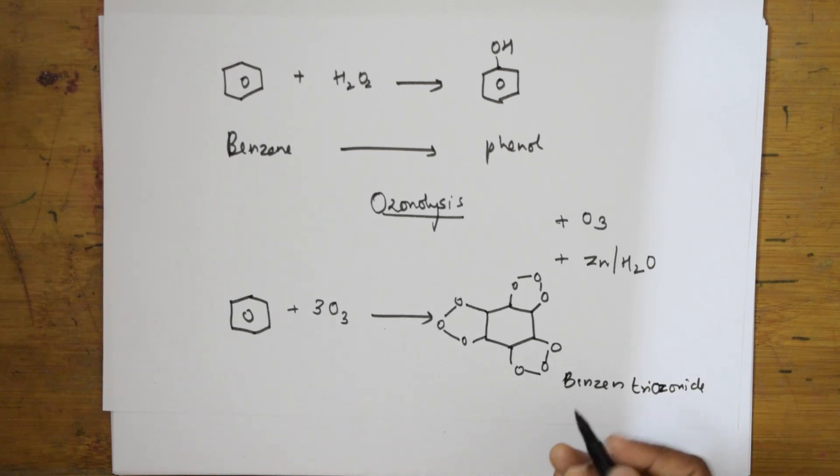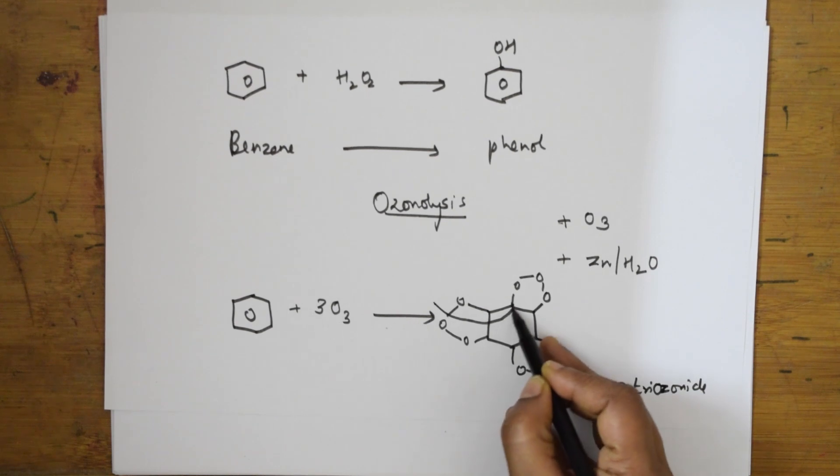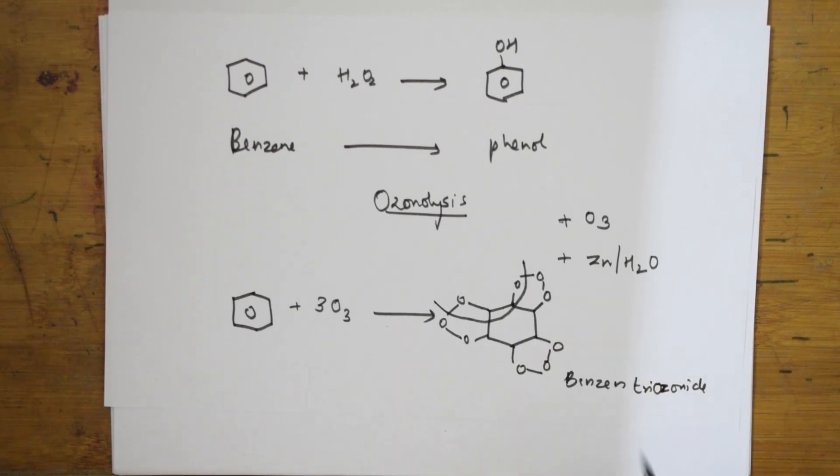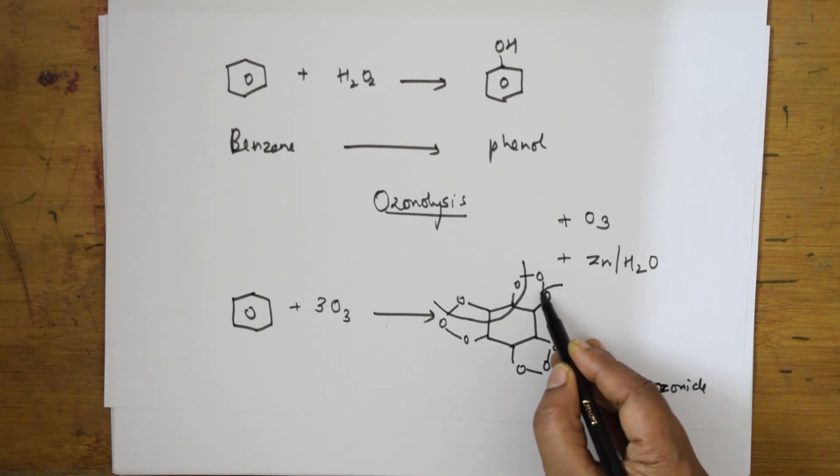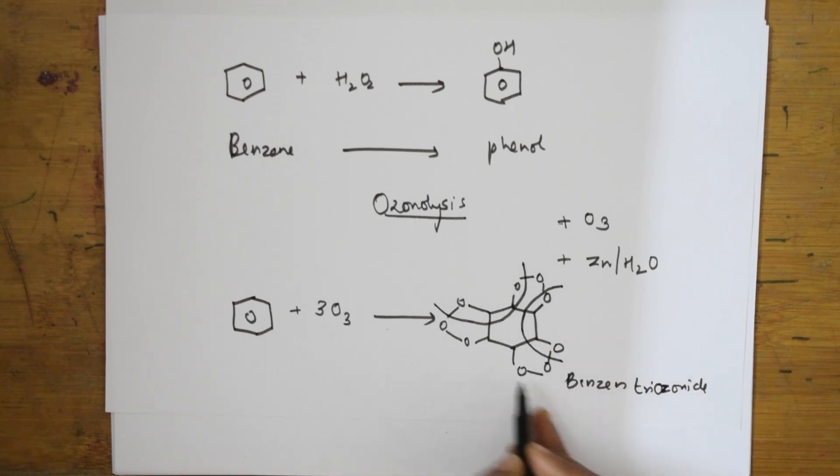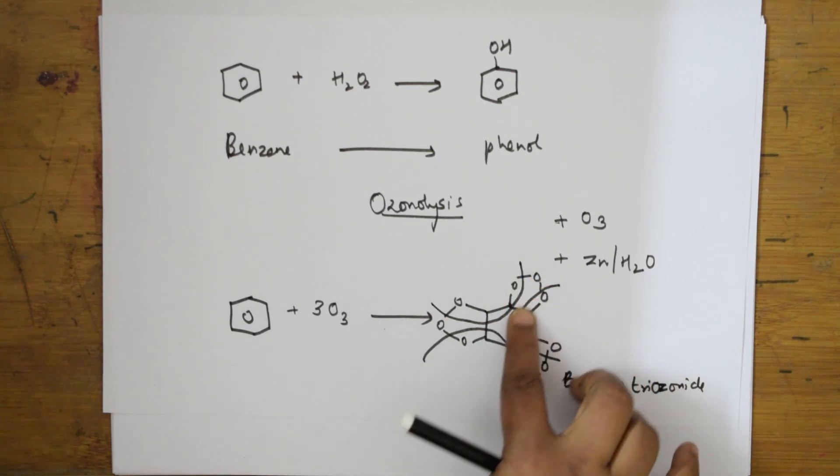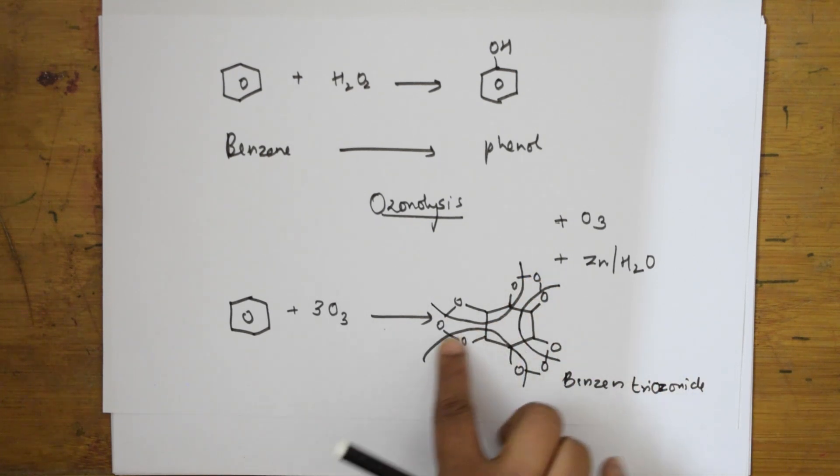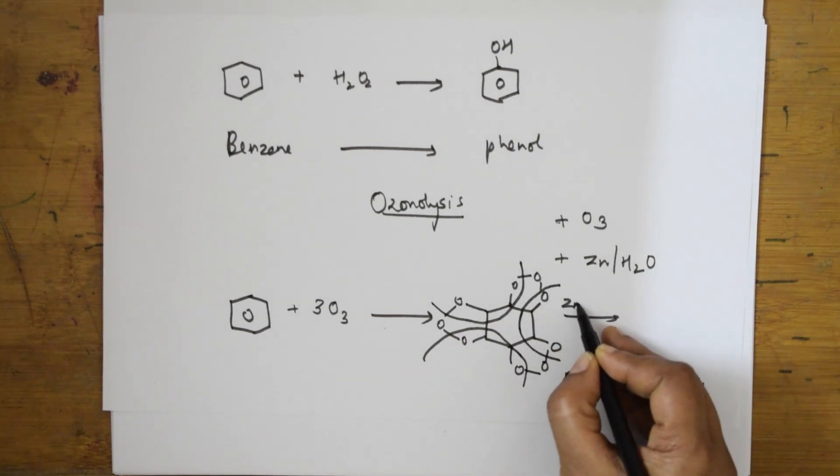Now it further cleaves. Where does it cleave? You can hold your pen like this and exactly it cleaves here. After that it is going to cleave in this direction and there is one oxygen here. Now immediately start here, this is going to cleave exactly here. One cleavage is below this oxygen, one more cleavage below this oxygen, one more cleavage below this oxygen. It breaks up.